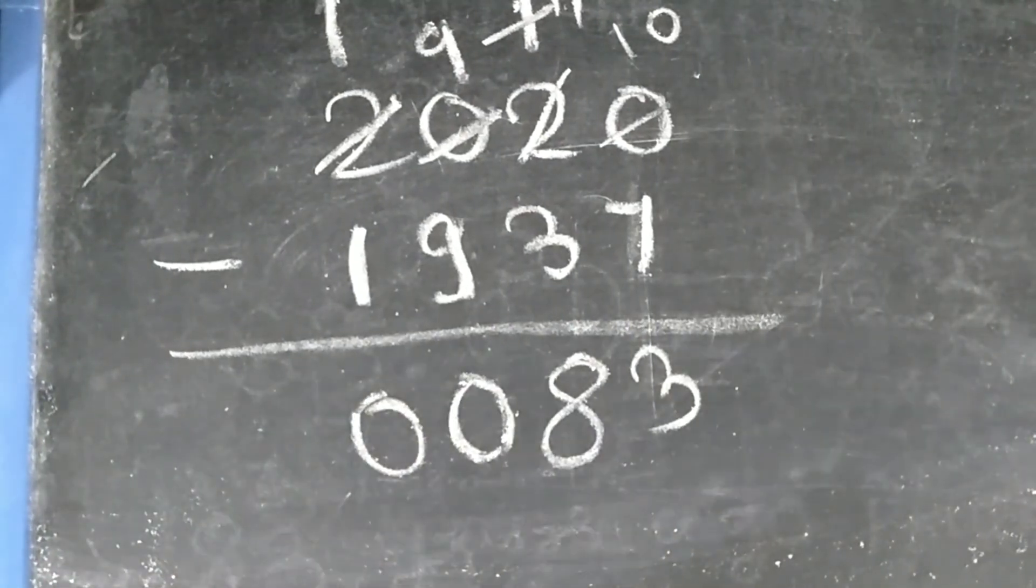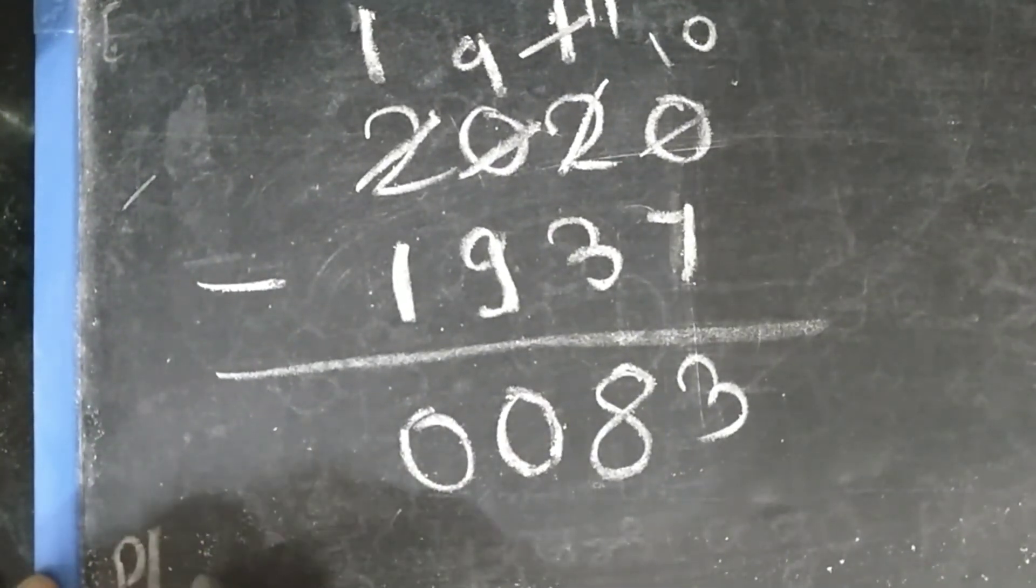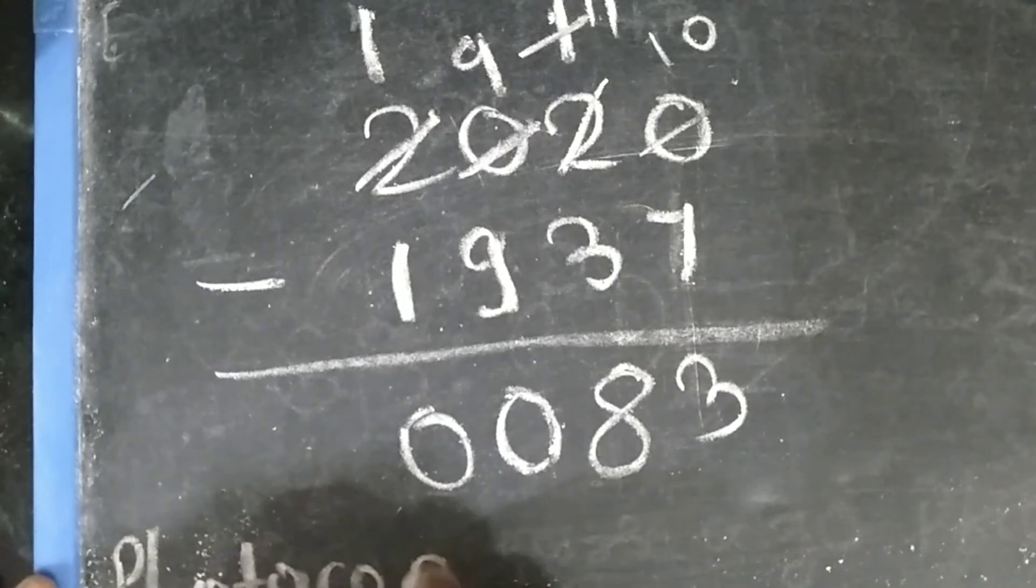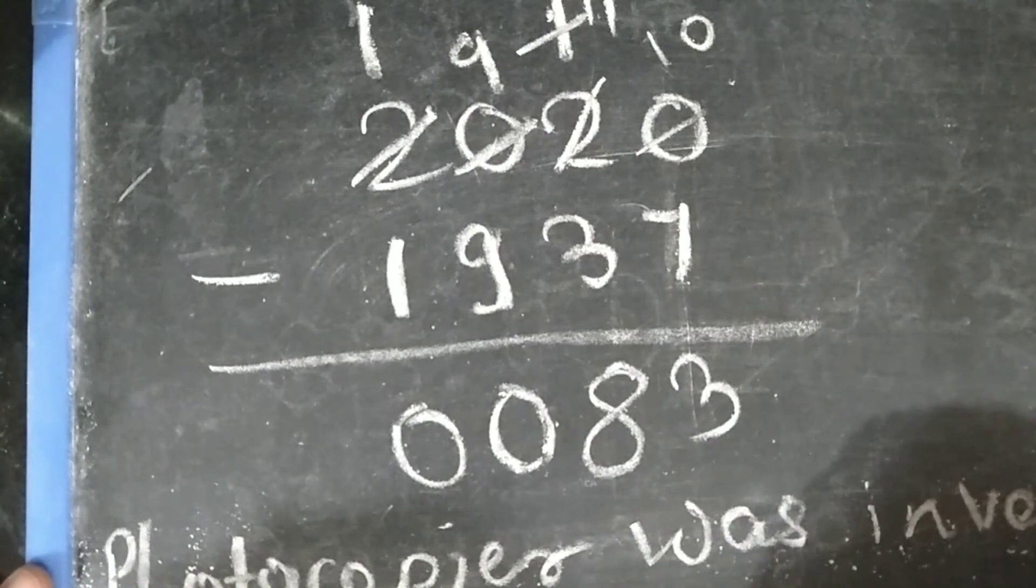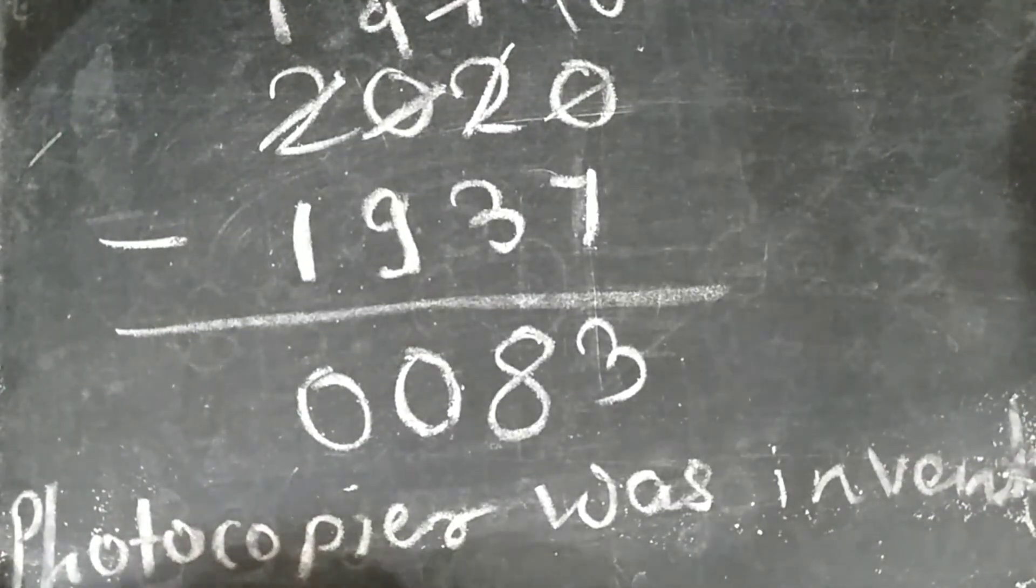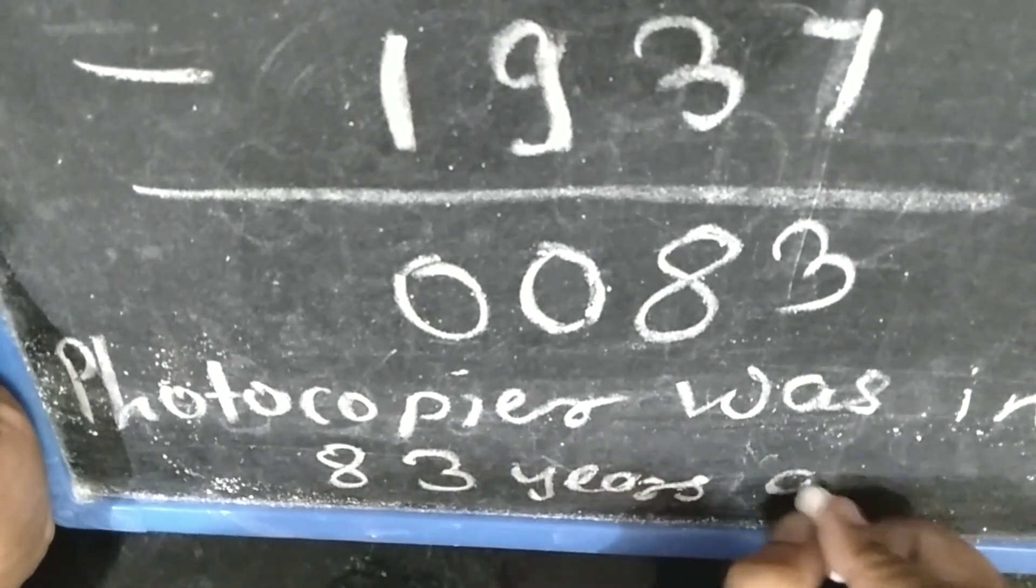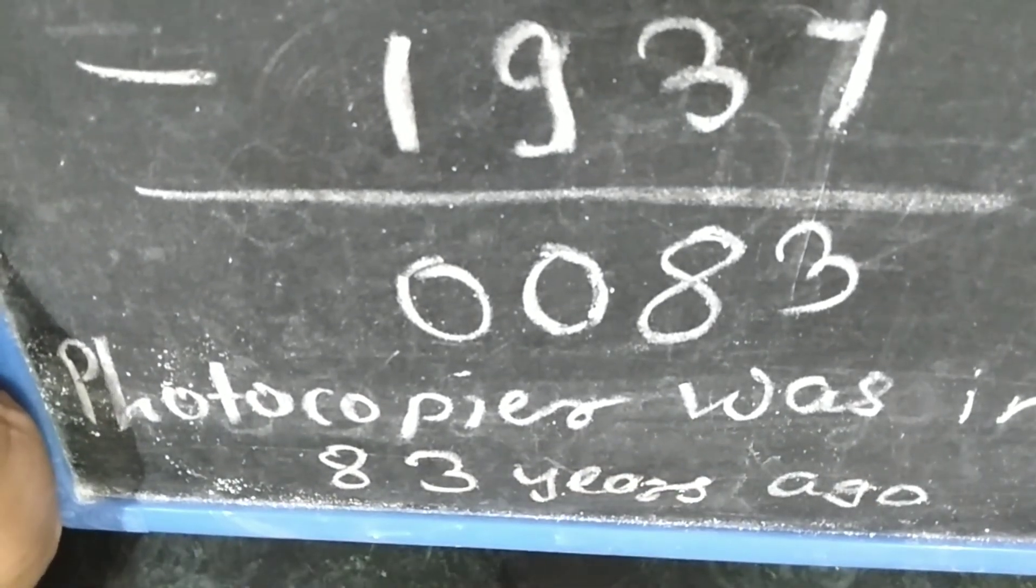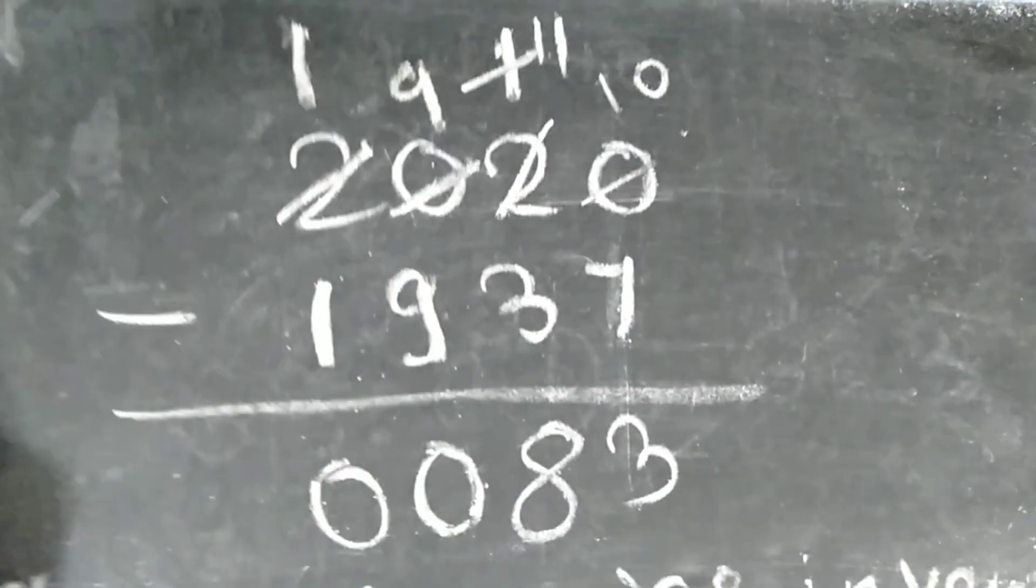Students, whenever you are solving this type of example you should write final answer. You can write like this: photocopier was invented 83 years ago. Understood? Students, remaining is homework for you.